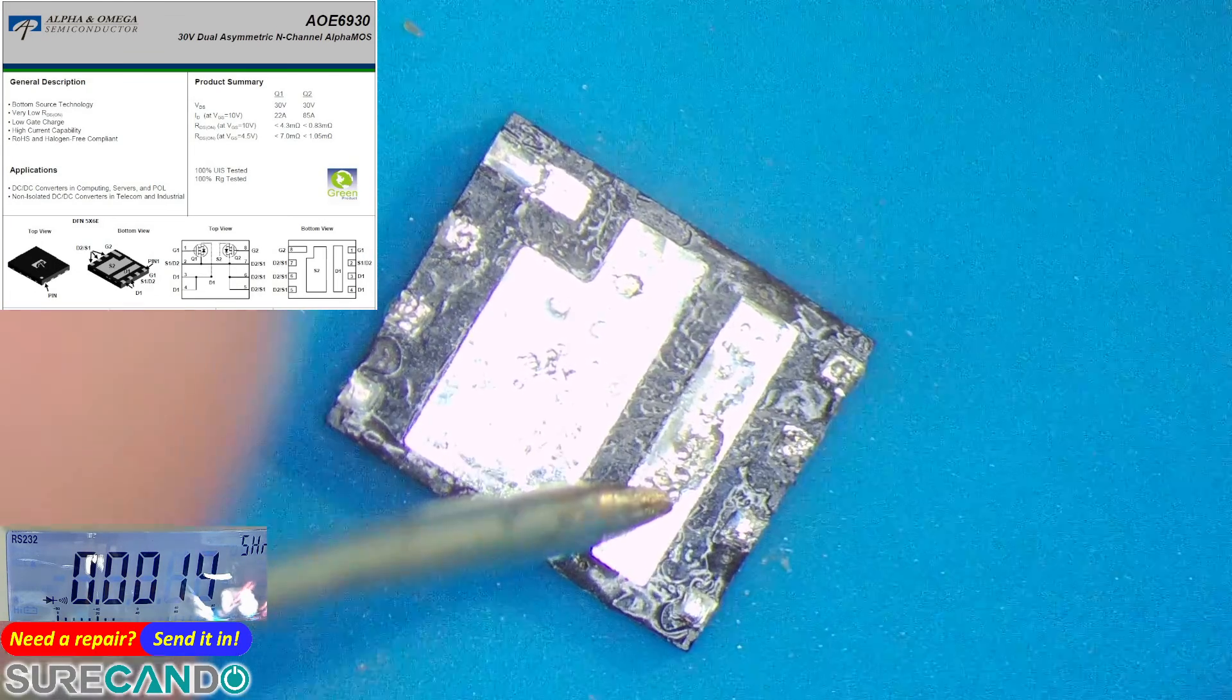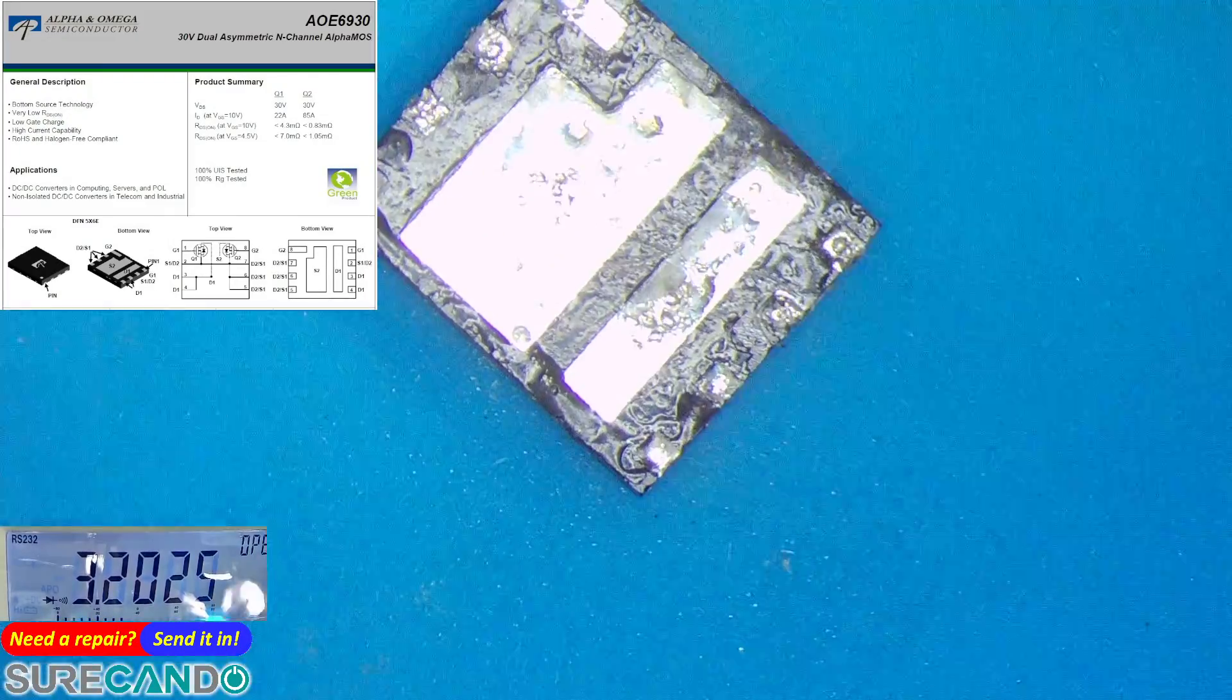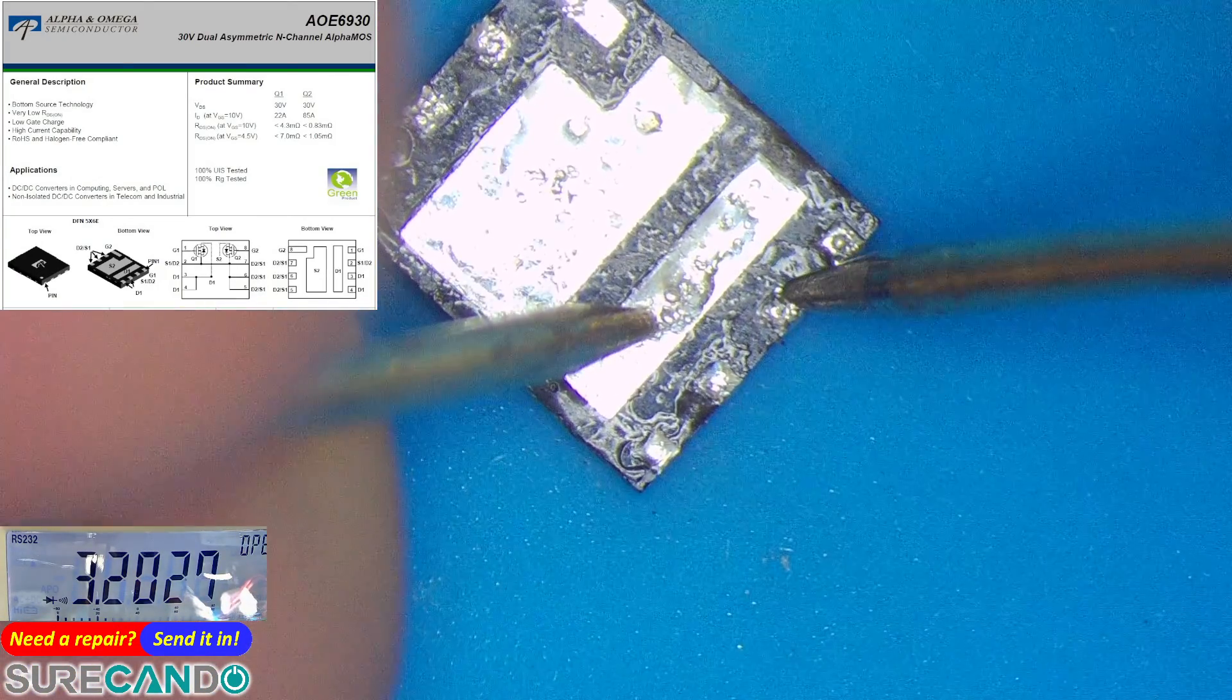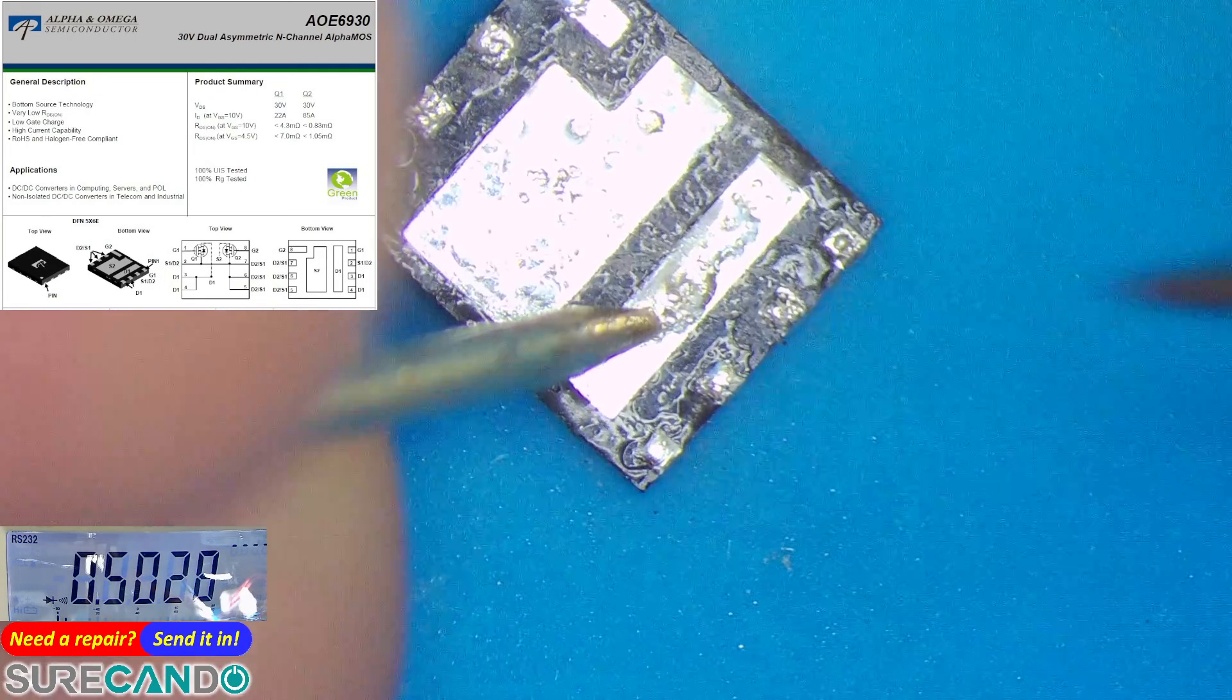There it is. Now if I put my finger on it to short everything again, wait a little bit. Let's try drain to source again. It doesn't beep because it's closed. So this MOSFET, both MOSFETs in this dual channel, is good.